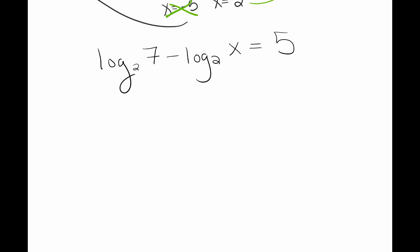So I want to combine this into one single log, that's always your goal. You want one log. Since this is subtraction, that means we need to divide the 7 and the x: log base 2 of 7/x equals 5. Now I have one log, that's always the goal. Now we're going to change this log notation to exponential. The base is 2 raised to 5 equals 7 over x, and I need to solve for x.